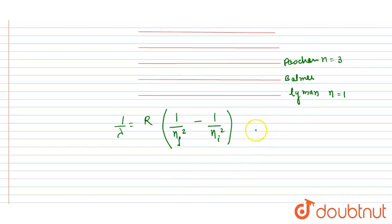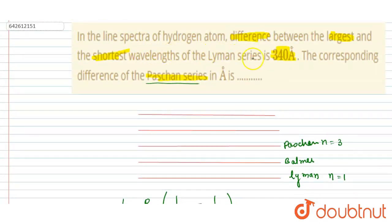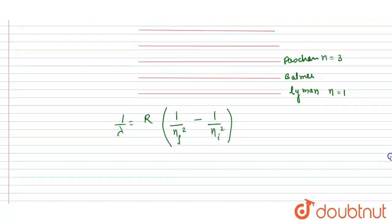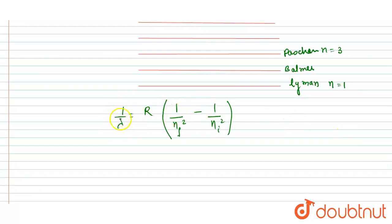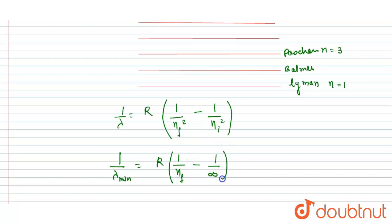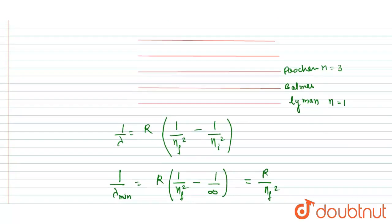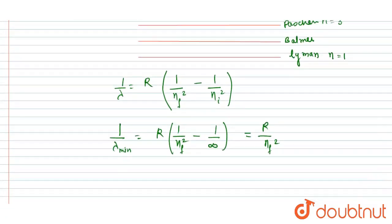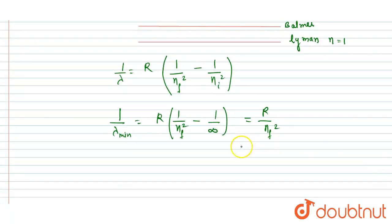It is given that the difference between the maximum and shortest wavelength is 340. The quantity 1/λ is maximum when n_i is minimum, making lambda minimum. So 1/λ_min = R/n_f², which gives us λ_min = n_f²/R for both Paschen and Lyman.